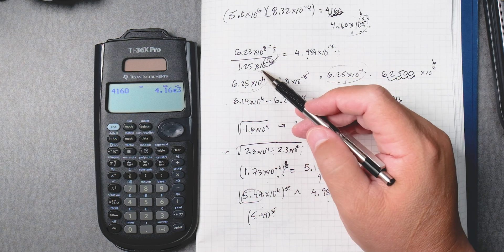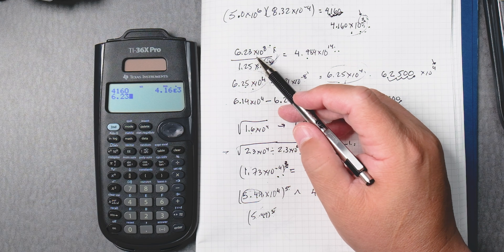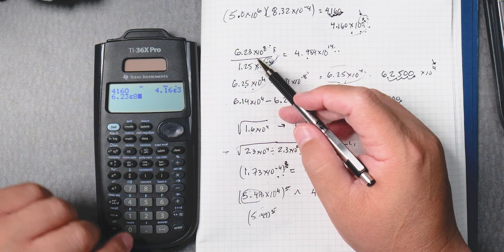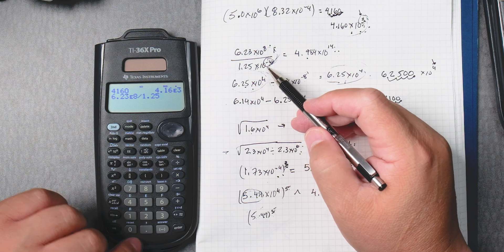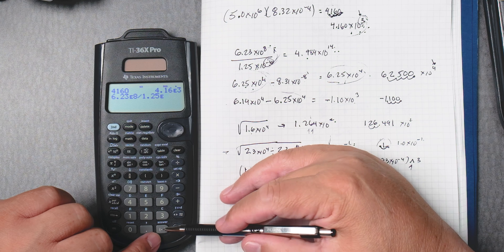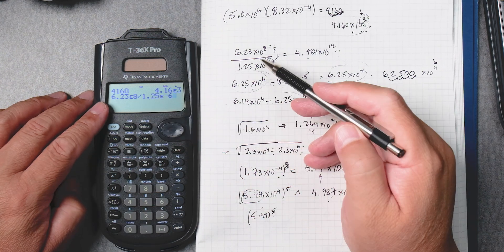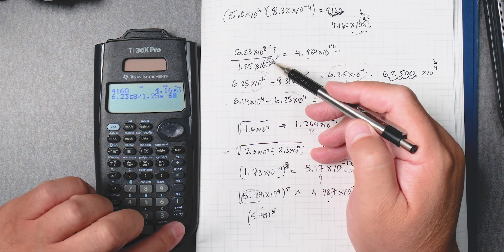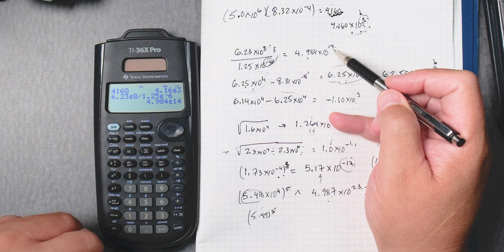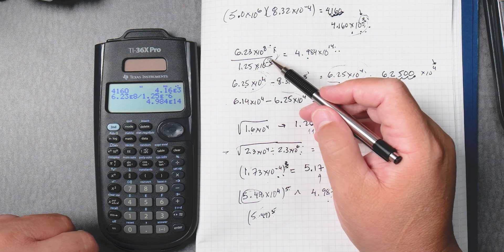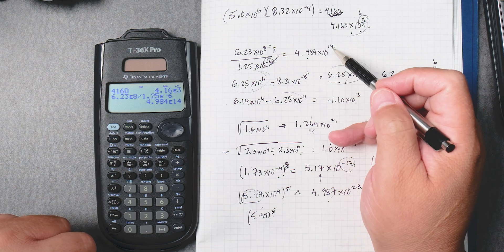Okay, so let's do division. So here we got 6.23, then double E times 10 to the eighth, divided by 1.25 double E to the minus 6. So, what you see here is sort of what you see here on paper. Enter. Then we get 4.984 times 10 to the 14. Now, this minus 6 goes up and gives you plus 14, and that's why you got a plus 14 here.